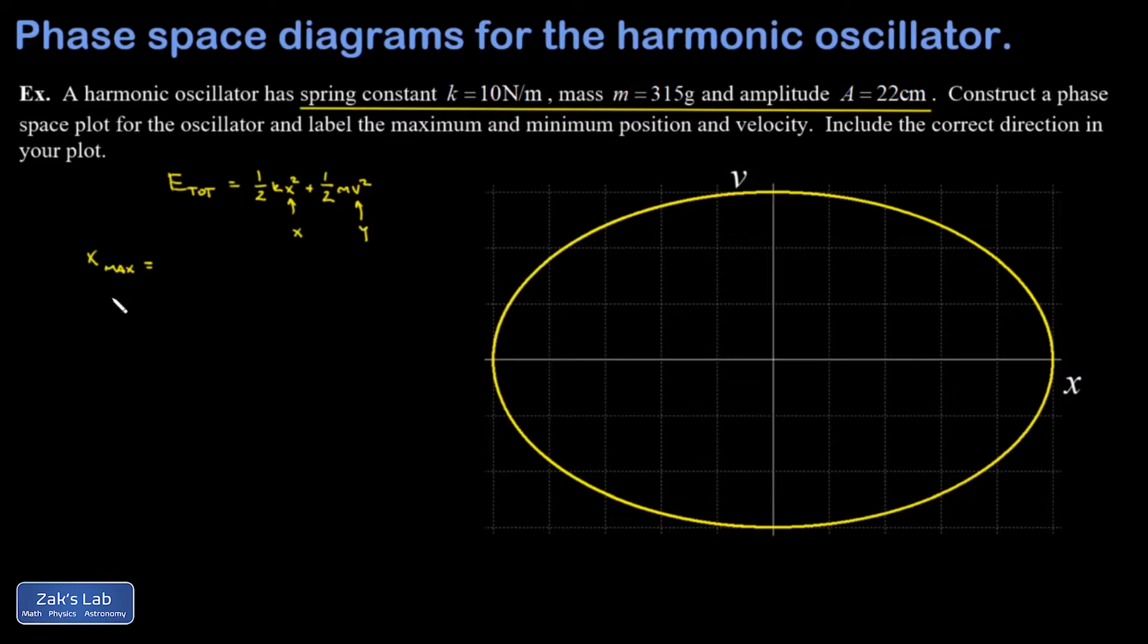I'm told I have an amplitude of 22 centimeters. That means the maximum value of x is going to be 0.22 meters. The minimum value of x is going to be negative 0.22 meters. Those happen when the velocity is zero. These are the turning points for the oscillator.